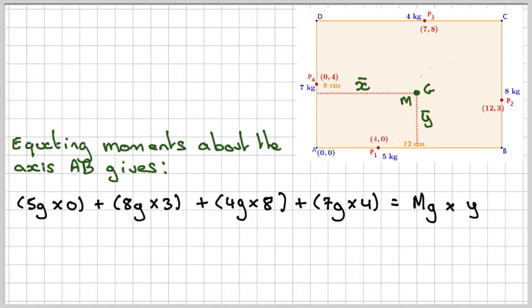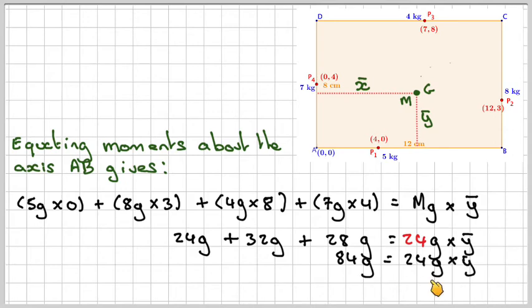And that will have to be equal to the total mass times G times the y-coordinate of the centre of gravity, which is what we're trying to find. So summing those up, that gives me 24G plus 32G plus 28G. M is 24. So it's 24G times y-bar. Summing those up, it gives me 84G is equal to 24G times y-bar. So it gives me that y-bar is 3.5.